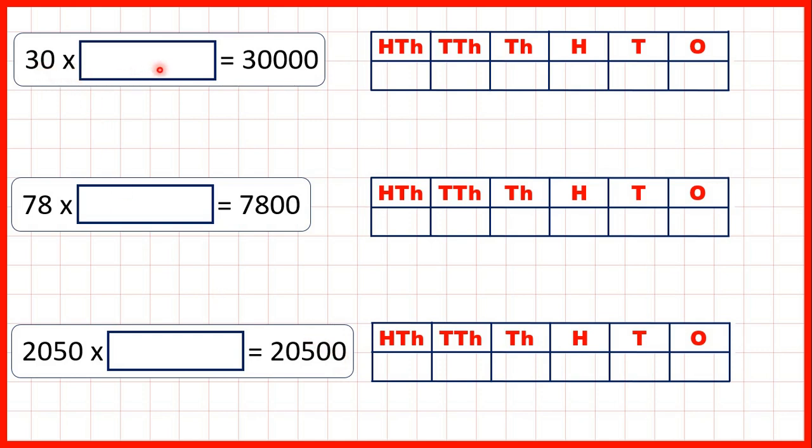So 30 times what equals 30,000? Our missing number is 1000. That's because 30 times 1 is 30, but then multiplying by 1000, we write three zeros on the end of our number.